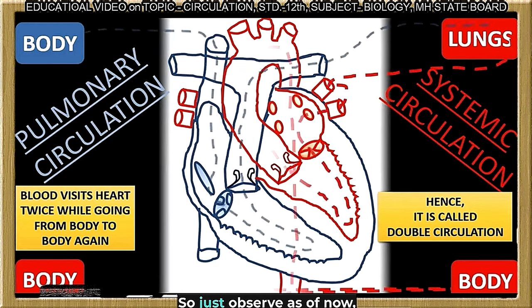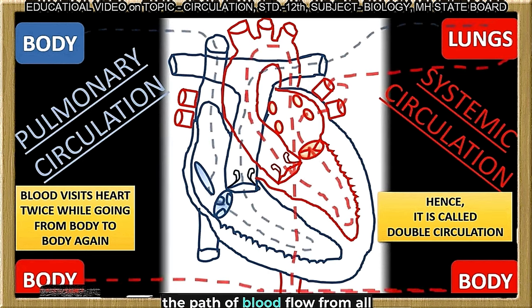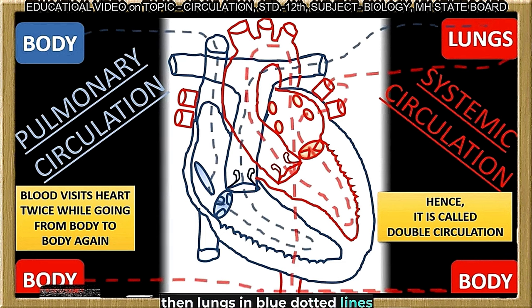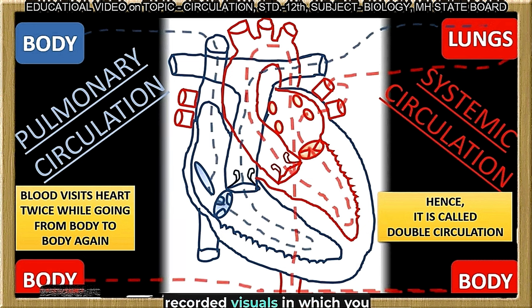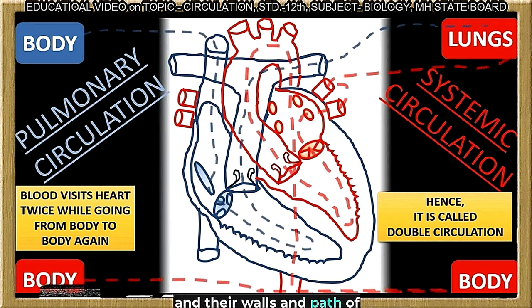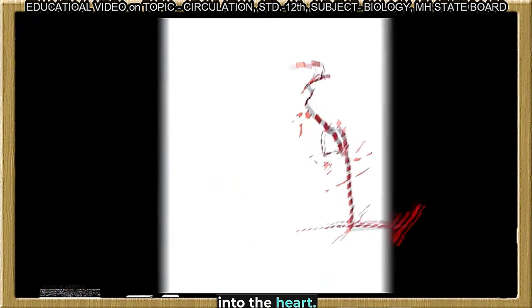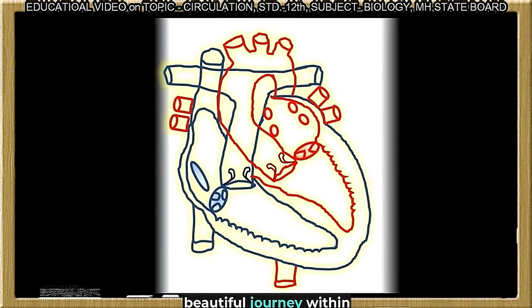Observe the path of blood flow from all parts of the body to the heart, then to the lungs shown in blue dotted lines, and the path of blood flow from the lungs back to the heart, and then from the heart to the body. Blood visits the heart twice — hence the name double circulation. To understand the exact physiology, let me show you self-recorded visuals of the four chambers, their walls, and the path of double circulation by entering directly into the heart.